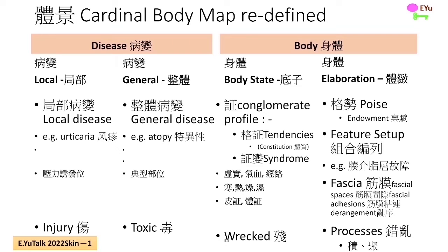In terms of lesions, it's easy — it's a local problem. The second is an overall body problem. This division is not absolute; it's the simplest for everyone to understand. What is the local disease problem? For example, urticaria mentioned this time is local. What is the overall body disease? For example, for atopic skin, the body itself as a whole is easy to react to any little thing. In this regard, the body part may sometimes react due to a little pressure, and there may be local parts reacting typically. After these, the second column is about looking at the body. I will use two terms: the first is the body state, representing its foundation condition. The second is the elaborate details, which refers to the fine body details.